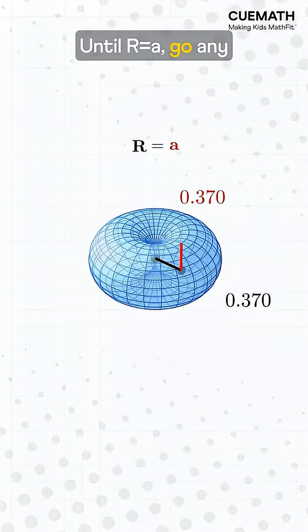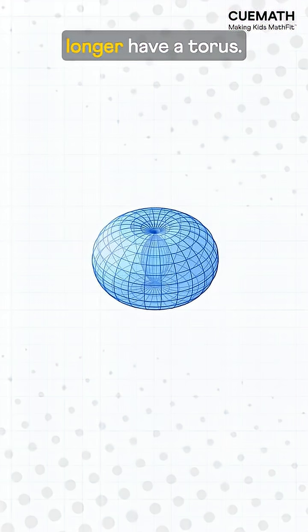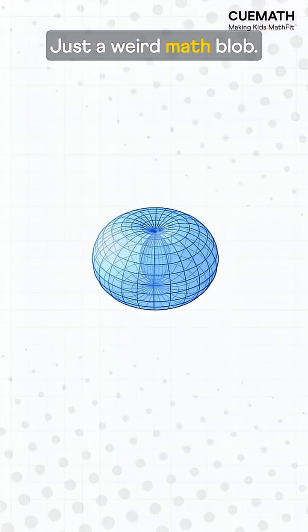Until r equals a. Go any smaller and you no longer have a torus—just a weird math blob.